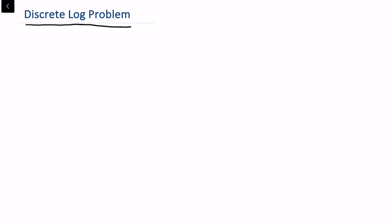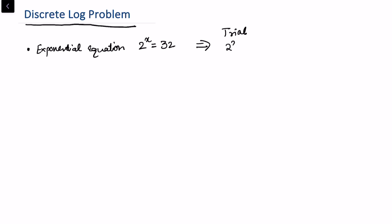In this video I'll be explaining what is the discrete log problem. But before that, let's have a look at an exponential equation and its solution to understand how we are moving to the discrete log problem. In an exponential equation 2^x = 32, there are different ways to solve it. By trial and error, we can see that 2 raised to the power x is the same as 2 to the power 5, so x = 5.